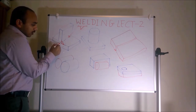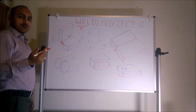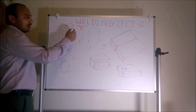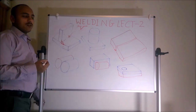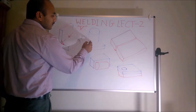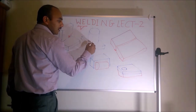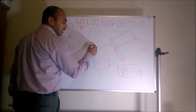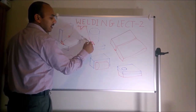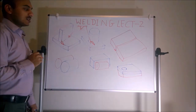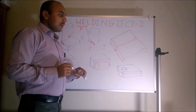Even if there is a slight gap of 1 or 2 mm between the two surfaces, we can still apply the fillet weld symbol. Similarly, for a cylinder on a plate, where the surfaces again form a 90-degree angle, fillet weld applies there as well.